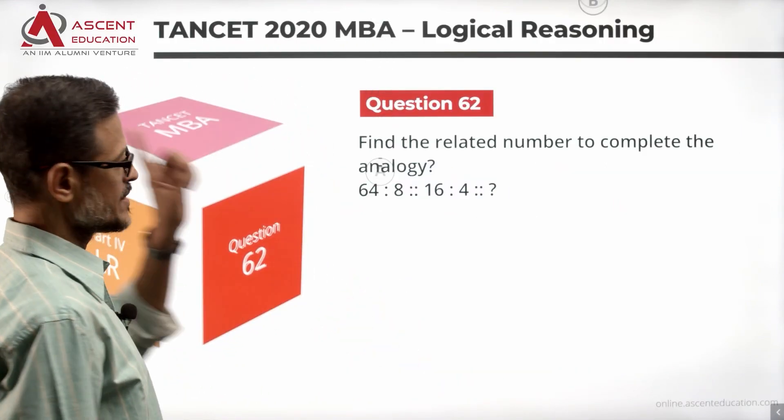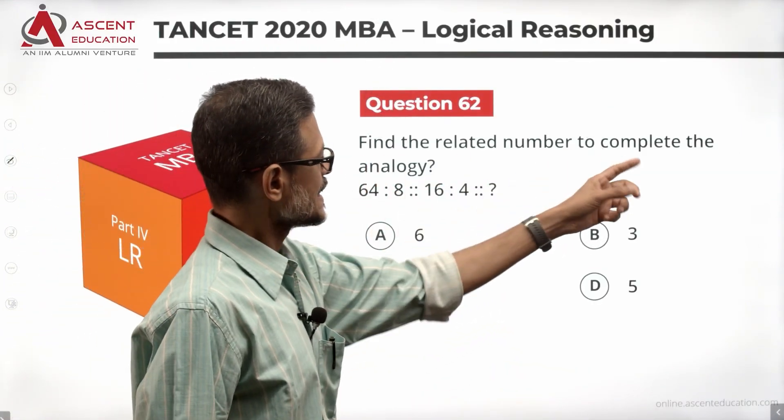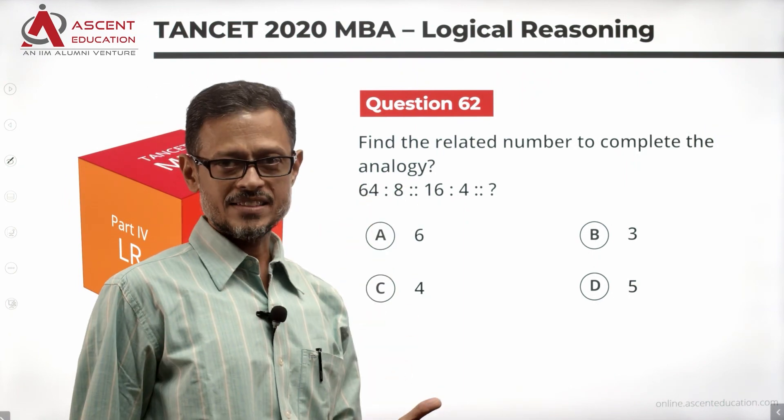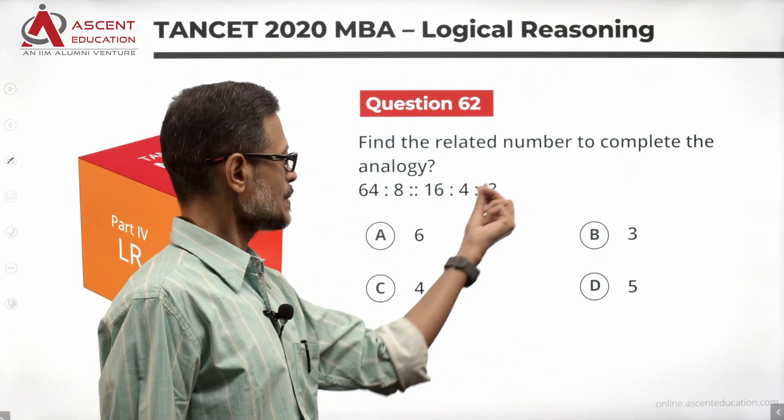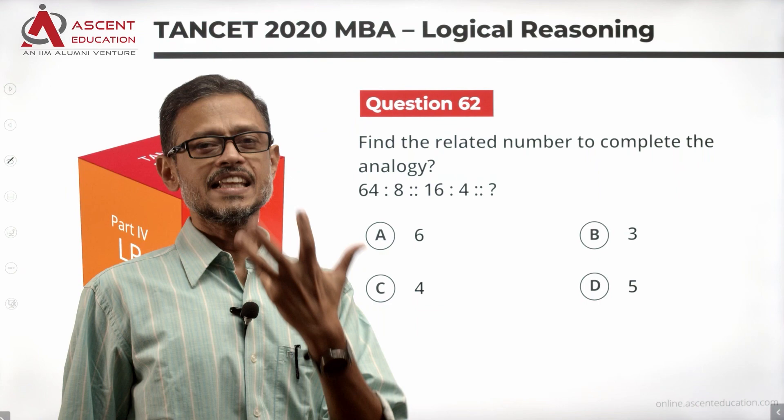Take a look at the question, reasonably easy one again. Find the related number to complete this analogy. What number is missing? This is why I have a question mark. What number is there?